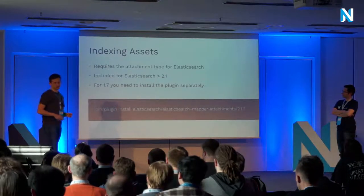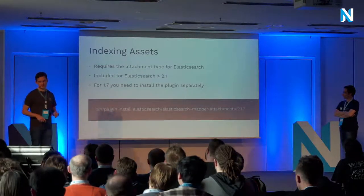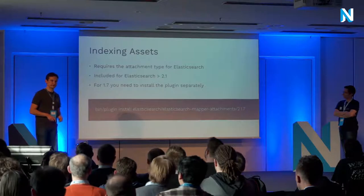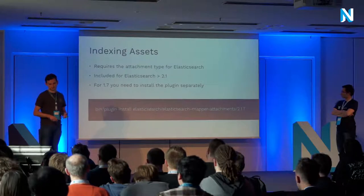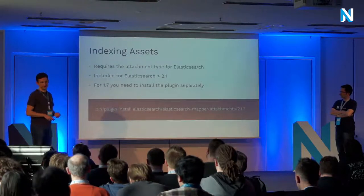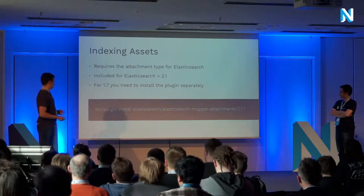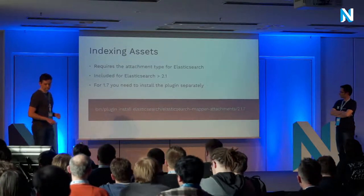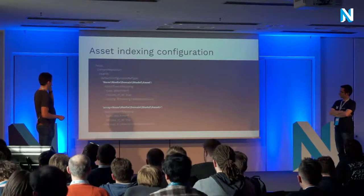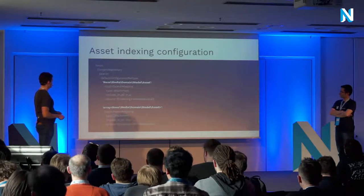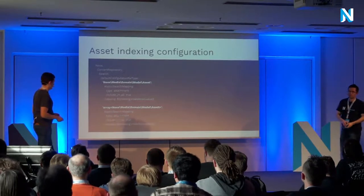You can also index assets — we haven't done so much with that yet, but it's not so hard. It requires a certain attachment type capability in Elasticsearch, already provided in versions 2.1 and up. For version 1.7 you need to install a plugin separately, which is quite easy — you only have to run one command. To set up the indexing configuration, you extend the default configuration, override it in your settings, and add the configuration for single assets or asset lists, and then they are also indexed.